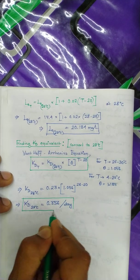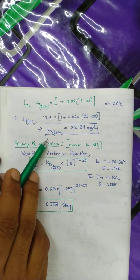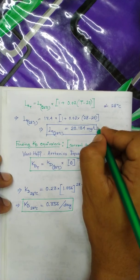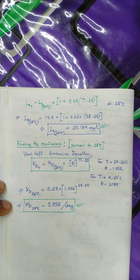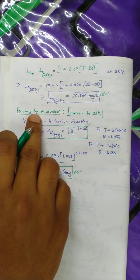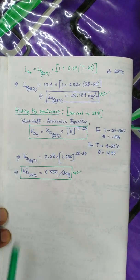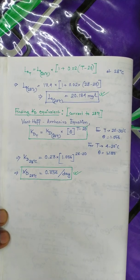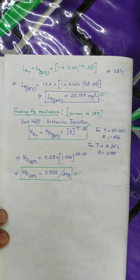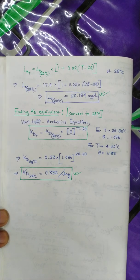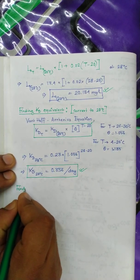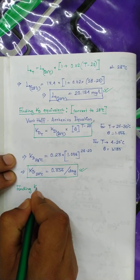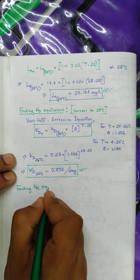So now two factors are actually known to us. We have just one thing left, which is the KR equivalent — the reoxygenation constant equivalent. We need to find it, and once we have these three things we will have almost everything ready for the Streeter-Phelps oxygen sag curve equation.